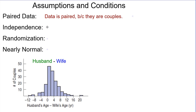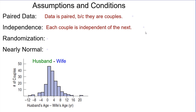Next: independence. Are the samples independent? Each couple is independent of the next couple, but of course the husband's age is not going to be independent of the wife's age — an older husband typically means an older wife because they were an older couple who probably got married when they were younger. The two groups don't have to be independent of each other; it's each individual pair that has to be independent of the next pair. That's a little bit different.